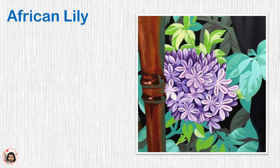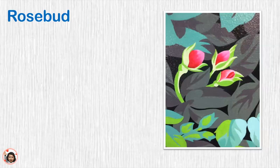The first flower is the purple African lily. This flower is included because President Obama has family from Kenya. The rosebud is another flower in the painting. The rosebud is included because it is a symbol, or image, of love and courage.